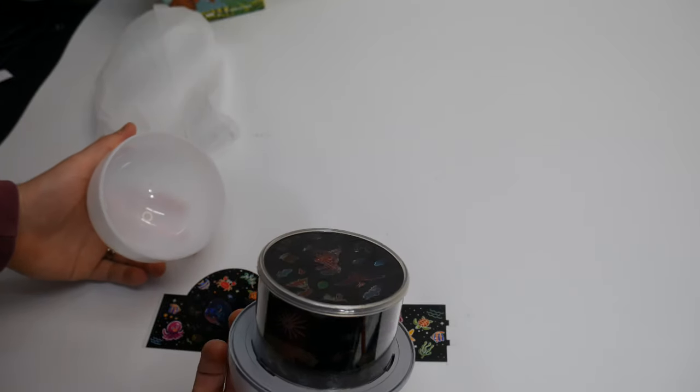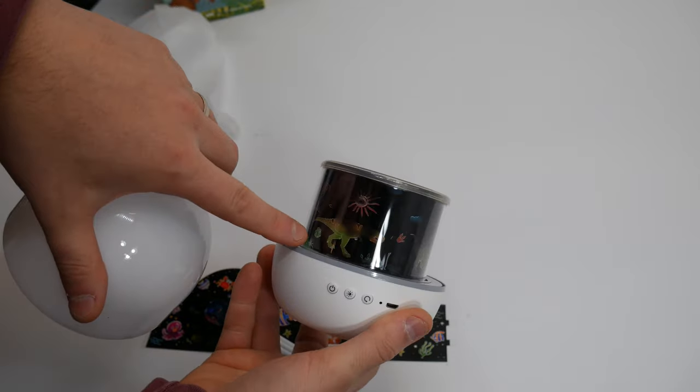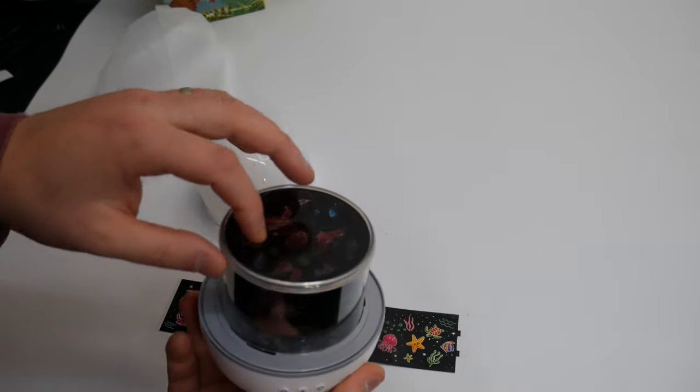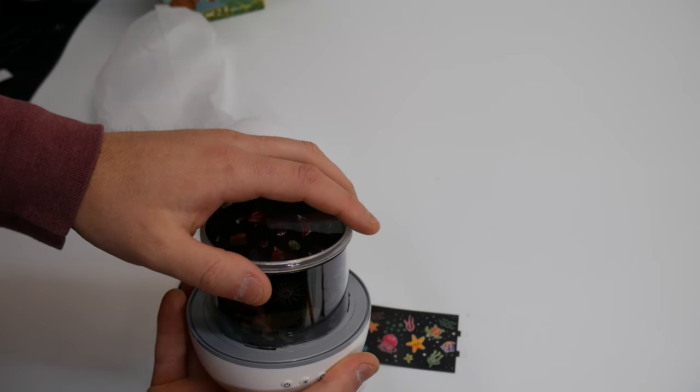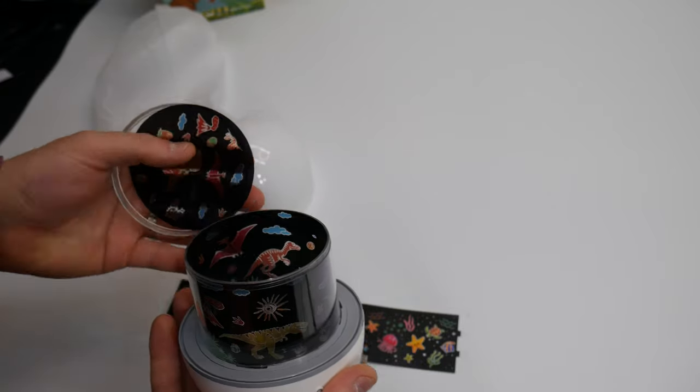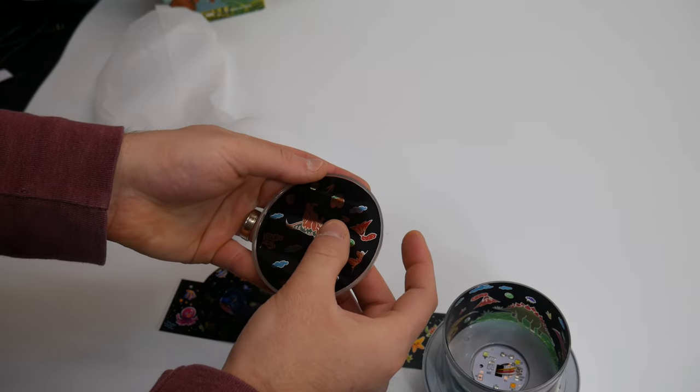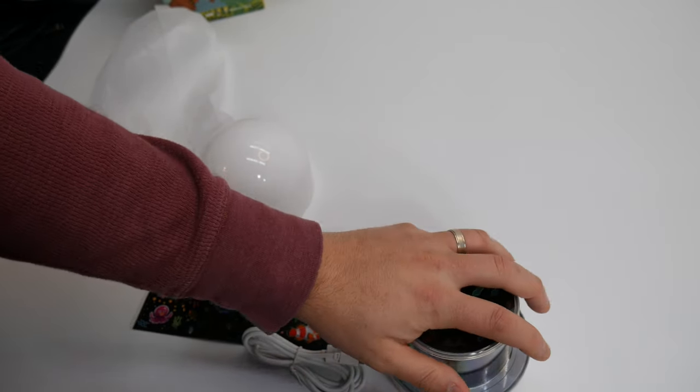Twist that, pop it open, and there you can see. So you can put the circle one on the top if you want, and that just pops off and you place it inside just like that. Probably the easiest way to do it is to place it down in here and then put the lid back on top.